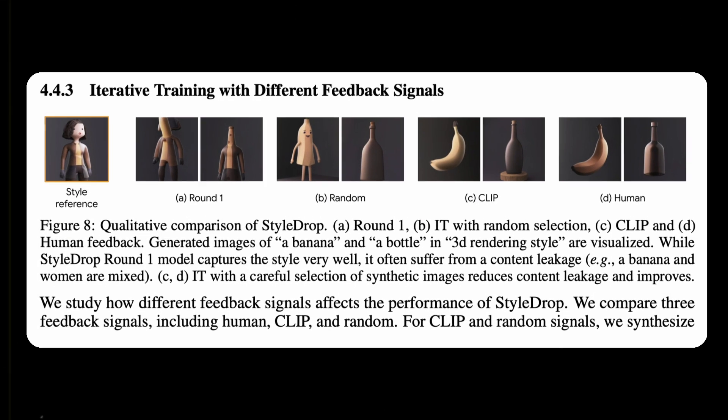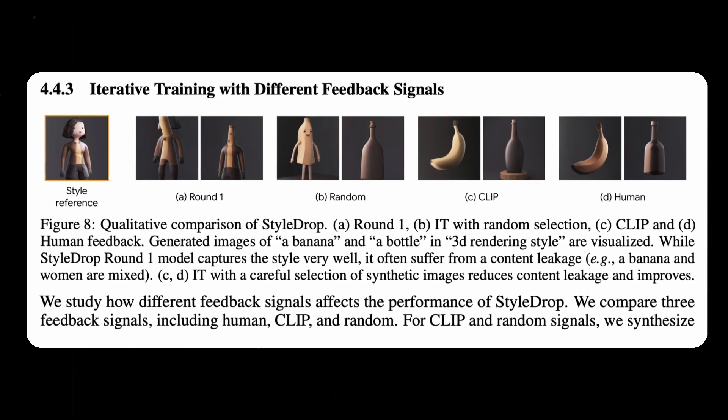Secondly, the effectiveness of Style Drop lies in its training process. It fine-tunes some part of the network parameters to learn new styles. Through iterative training with human or automatic feedback, the model continuously improves its quality, enabling it to generate photos that accurately replicate the desired style. Despite its complexity, Style Drop boasts impressive speed — even with human feedback, the entire process takes less than 3 minutes. Unlike other style transfer techniques, Style Drop achieves remarkable results using only a small number of photos for training.